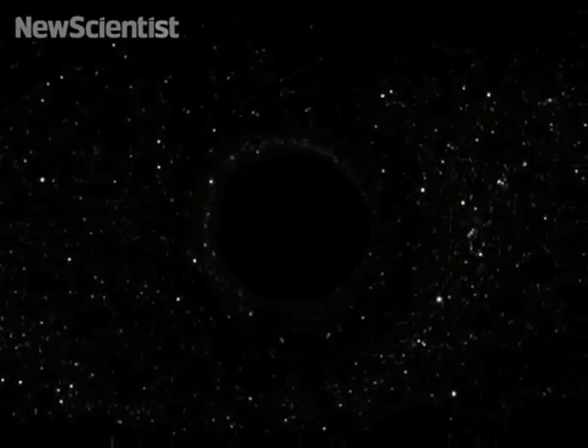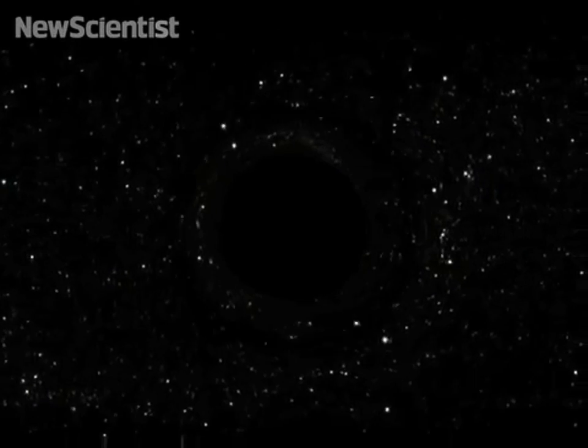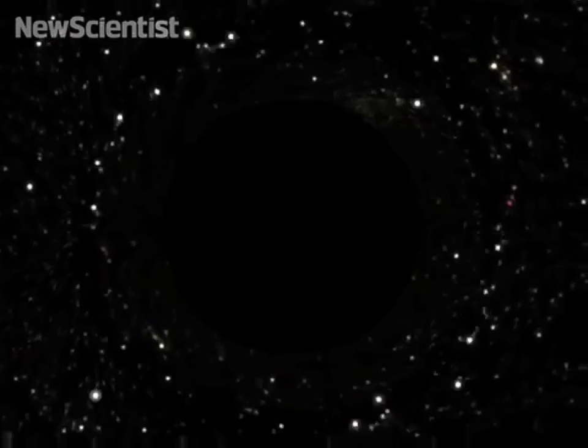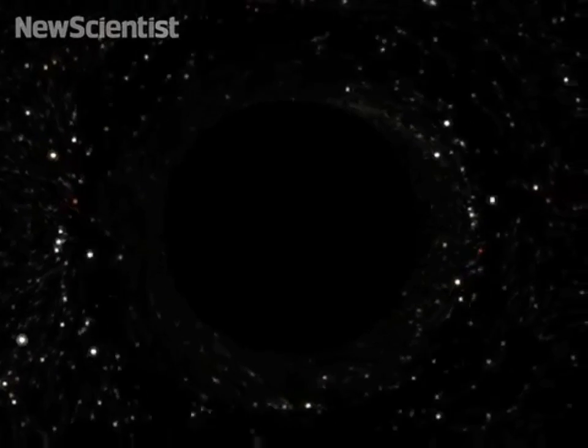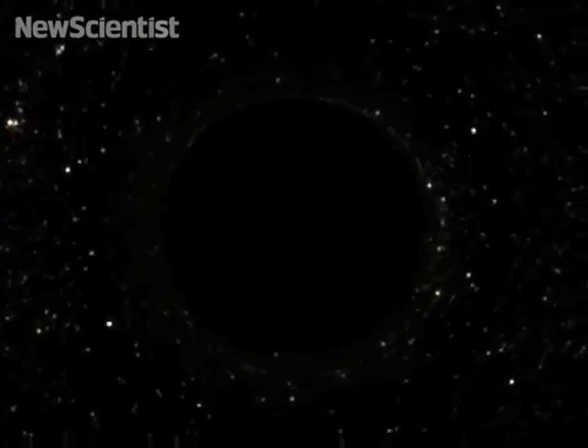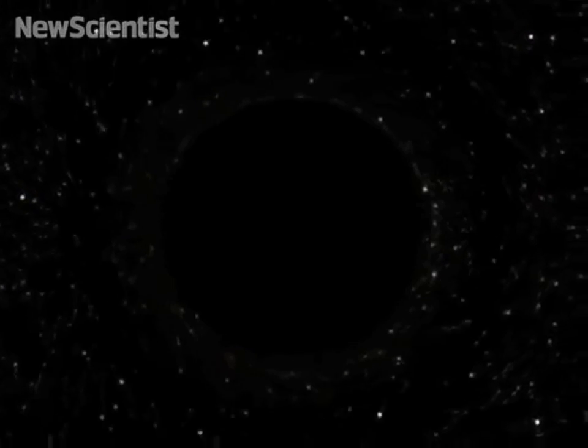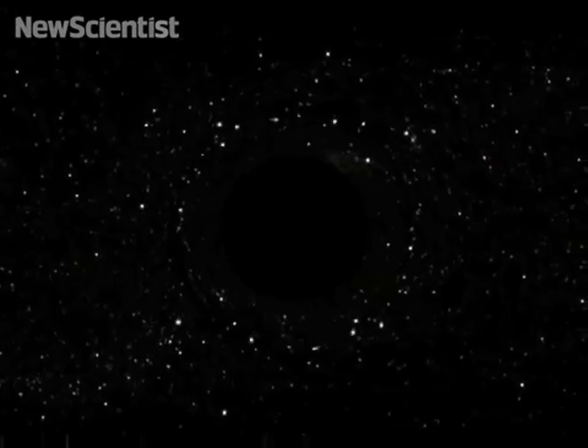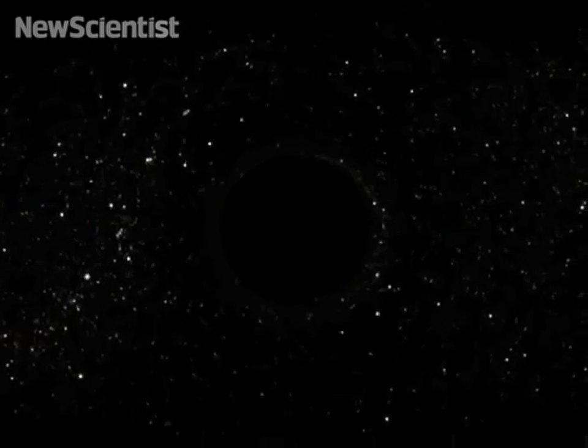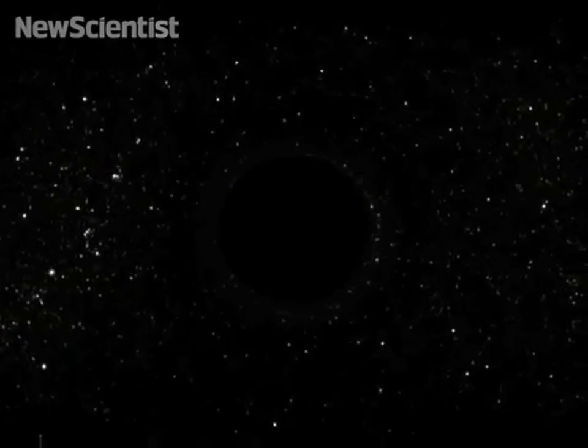This simulation shows how background stars would look to an observer orbiting a black hole. As distant stars approach the event horizon, their light becomes distorted. They appear twice on each side of the disk as they spin around it. The light bends because the black hole's immense gravity deforms the fabric of space-time that the light travels through.